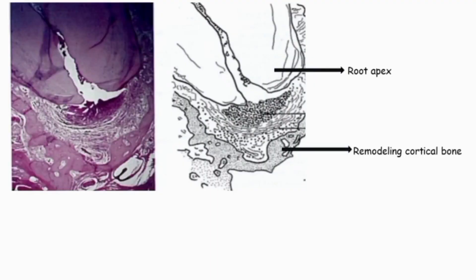Histopathology of periapical granuloma. This arrow shows the root apex where the periapical granuloma will be forming, and this arrow shows the remodeling cortical bone, and this arrow is representing the outer fibrous tissue.